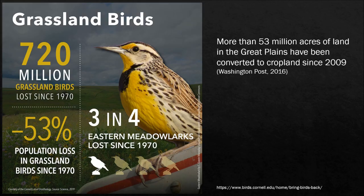Most of these problems for wildlife stem around a loss of land. A prime example is in the Midwestern United States, where 720 million grassland birds have been lost since 1970, or over 50% of their population. In one specific species — the Eastern Meadowlark — three out of four individuals have been lost during this time span, and this loss of species almost directly correlates to the conversion of natural grassland habitat.